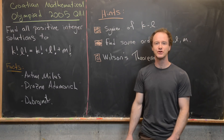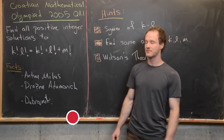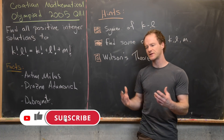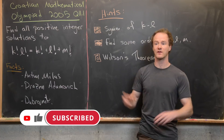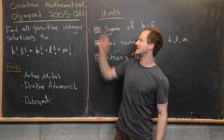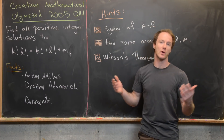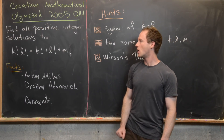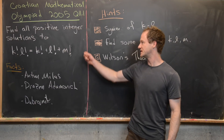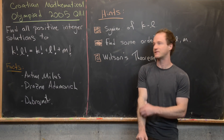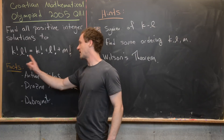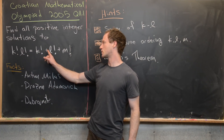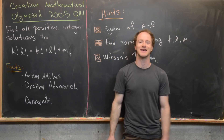Here we're going to look at a problem from the 2005 Croatian Mathematical Olympiad. It's question 11.1. This exam is broken down into different grade levels, and that's what the 11 is — this is the first question from that grade level. The goal is to find all positive integer solutions to this equation involving factorials: k factorial times l factorial equals k factorial plus l factorial plus m factorial.